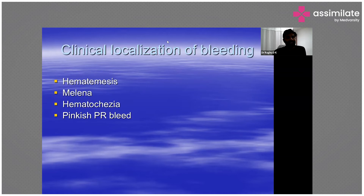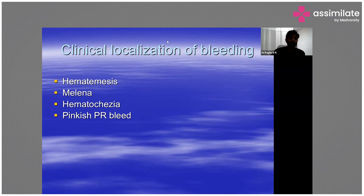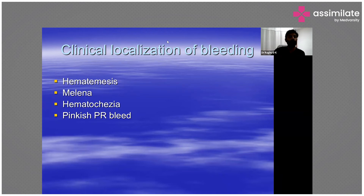Depending on the presentation, you can localize the site of bleeding. Hematemesis most likely indicates upper gastrointestinal bleeding. Melena — black, tarry stools — can occur when blood from the upper gastrointestinal tract is transported through the entire small bowel and large bowel, where it gets altered to become black and tarry.